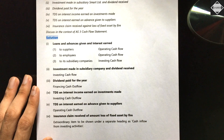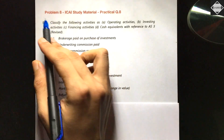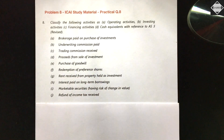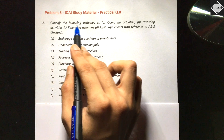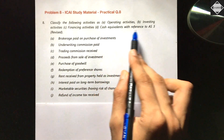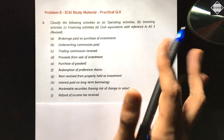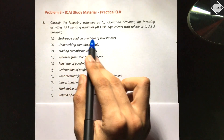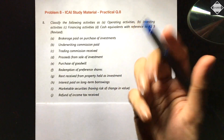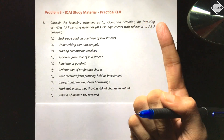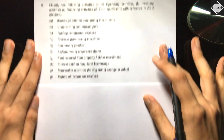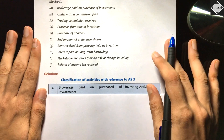Now let's move to Problem 8, from the ICAI study material — Practical Question 8. The question says: classify the following activities as operating, investing, financing, or cash equivalent with reference to AS 3. First item: brokerage paid on purchase of investment. Since purchase of investment is an investing activity, the brokerage paid on it also becomes an investing activity — simple and straightforward.